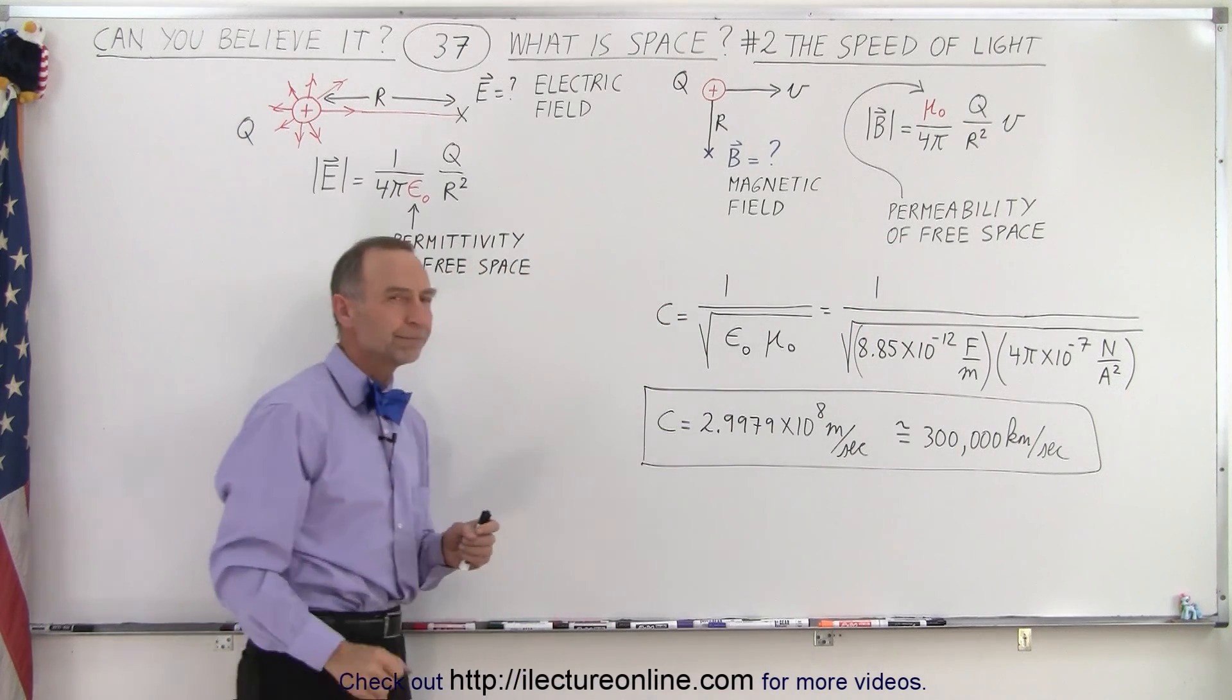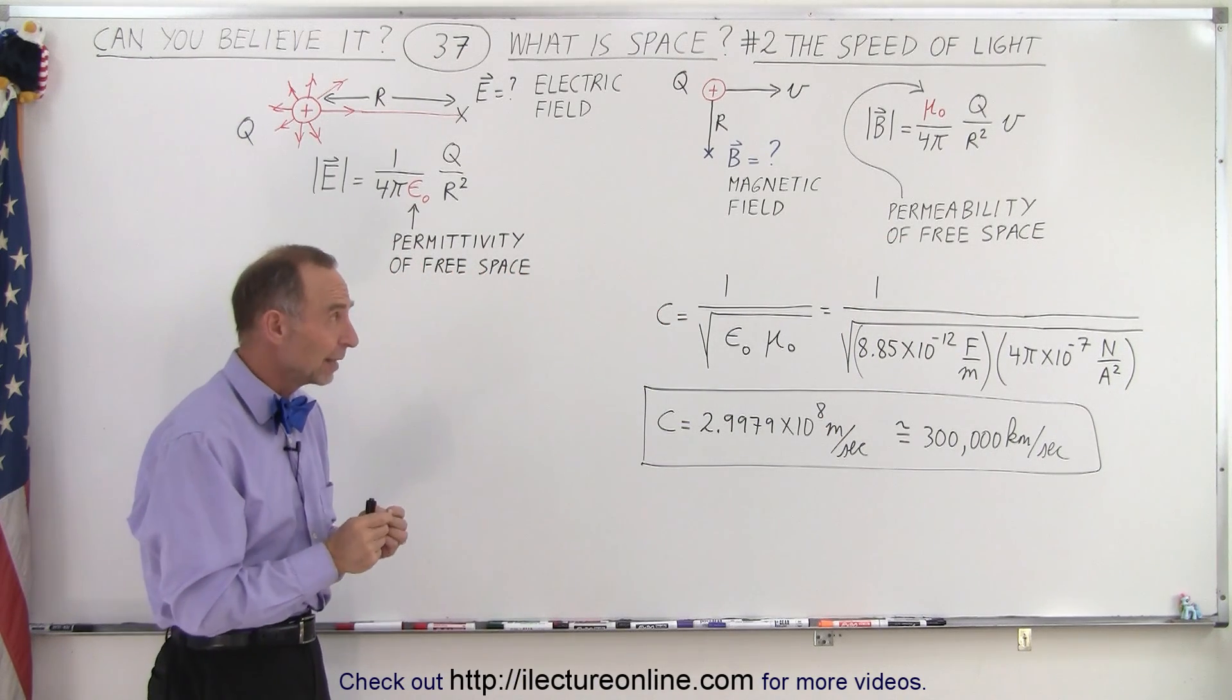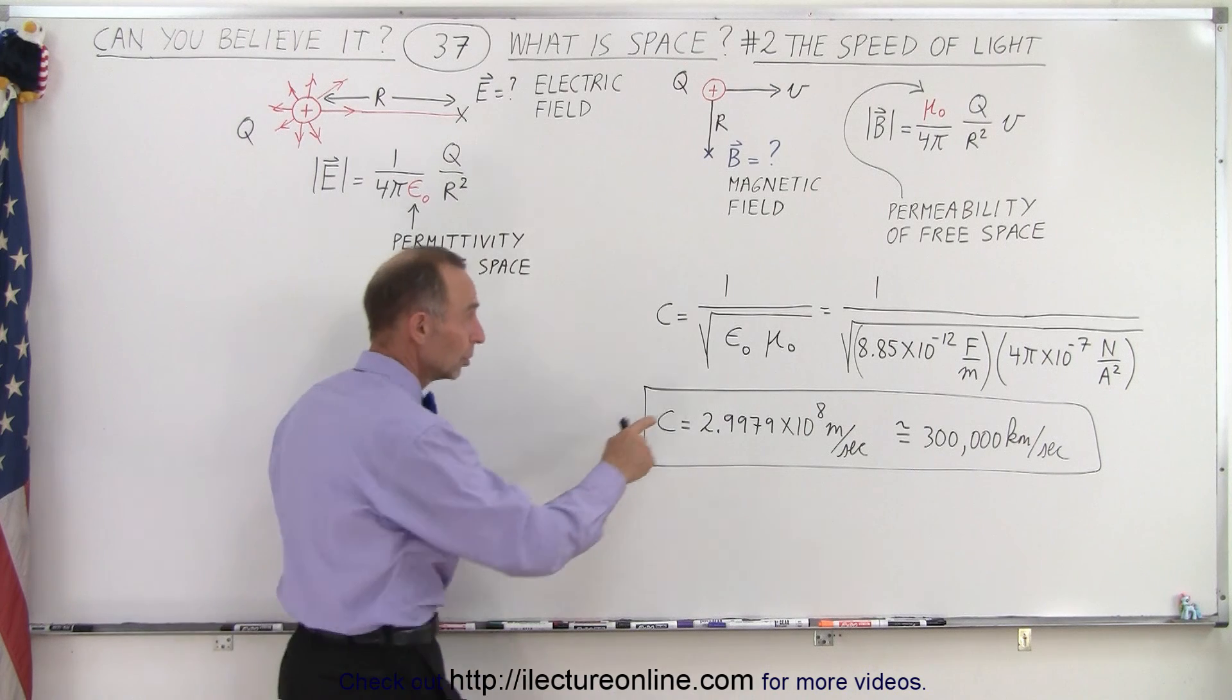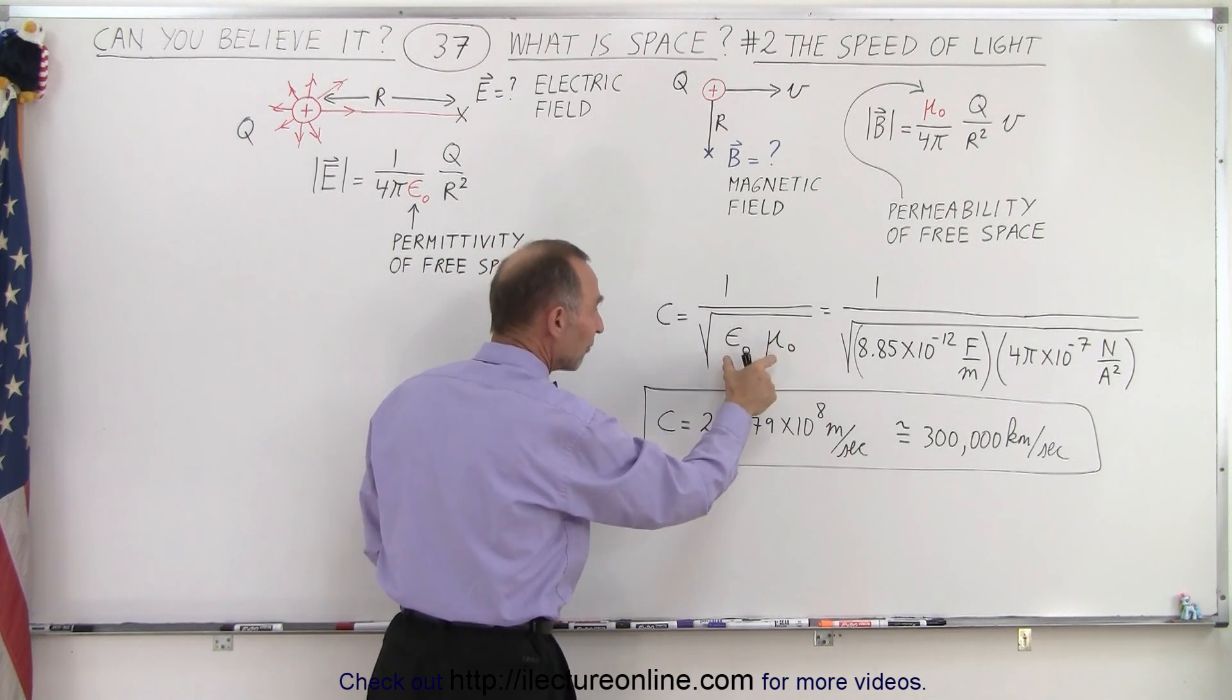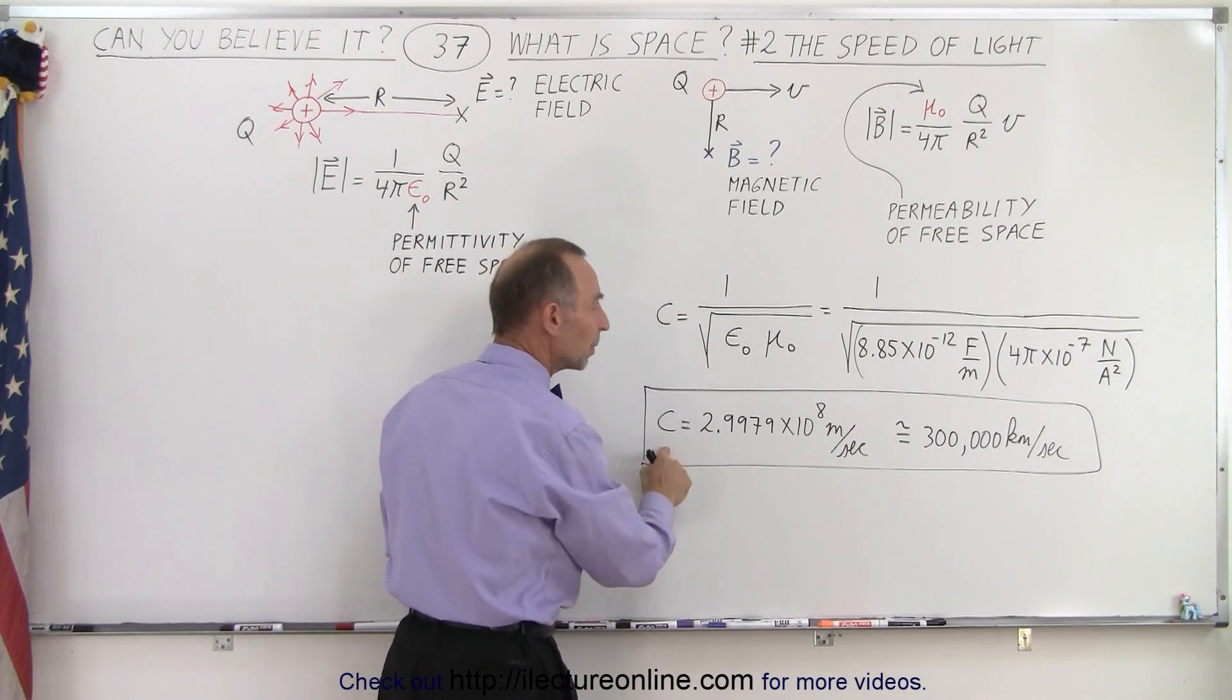Now, the amazing thing is that if we take those two, we multiply them together, we take the square root, and we divide it into one, we get the exact value for the speed of light.